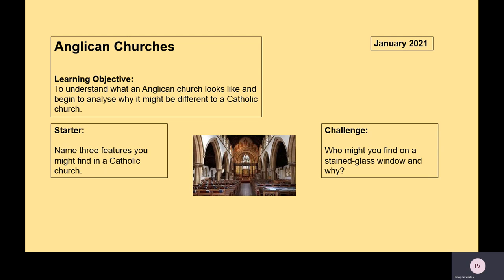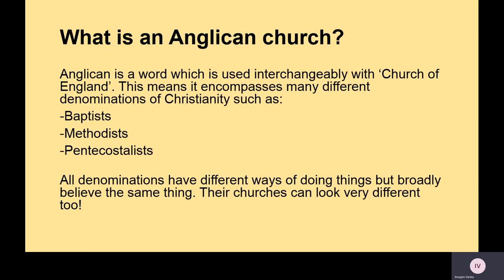So what is an Anglican church? Anglican Christianity is another word which basically just means Church of England. It encompasses many different denominations of Christianity, such as Baptists, Methodists, and Pentecostalists. Those smaller denominations of Christianity are all wrapped up in this idea of Anglican churches, but they all look slightly different, which is quite confusing when you're talking about Anglican churches.